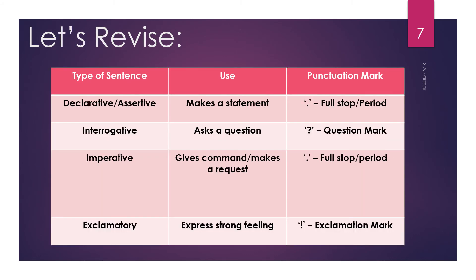Now let us revise whatever we have learned so far. There are four types of sentences. First is the declarative or assertive sentence, which makes a statement and ends with a full stop.